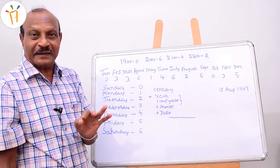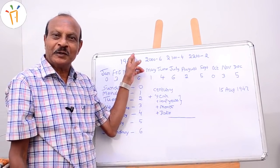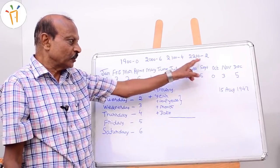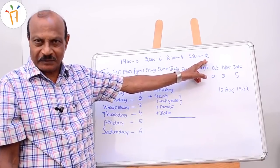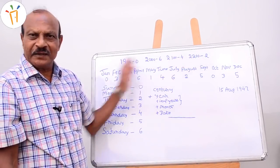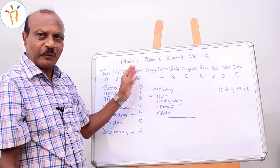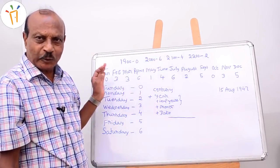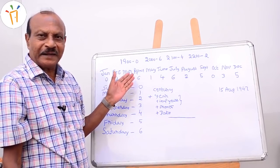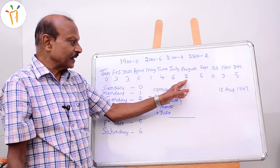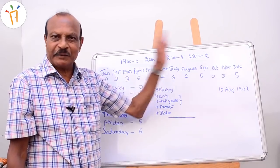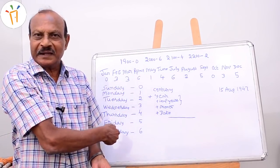I have given the century code numbers: for 1900 I have given 0, for 2000 I have given 6, for 2100 it is 4, and for 2200 it is 2. I have also given code numbers for months. January is 0, February is 3, March is 3, April is 6, May is 1, June is 4, July is 6, August is 2, September is 5, October is 0, November is 3, and December is 5.